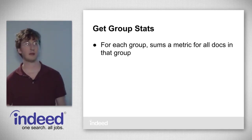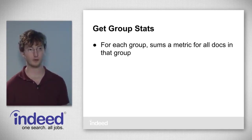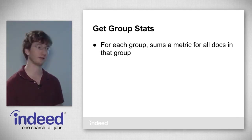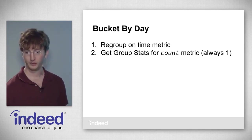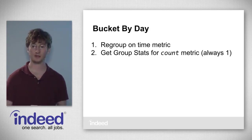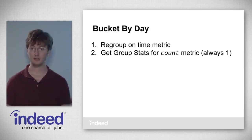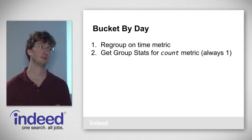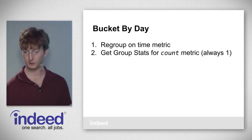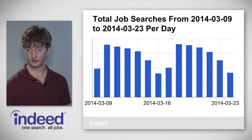Lastly, there's a get group stats command, which for each of our groups sums a metric for all the docs in that group. For our example, we regroup on the time metric and then get group stats on the count metric — we want to know, for each group corresponding to a particular day, how many of our documents fall into that group. Count is always 1 for every doc, no matter what.